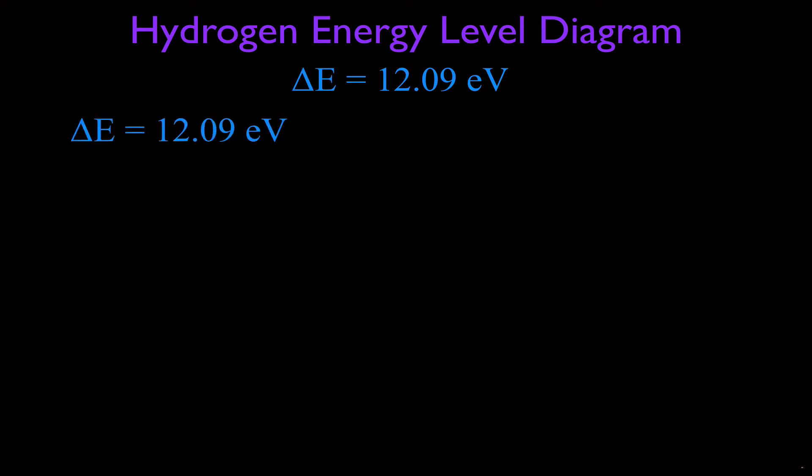First, I'd like to convert this to joules. Now you can do this all in one step. In the last video I went through it more step by step. This time we're going to combine a couple steps, but first of all I want to convert 12.09 electron volts into joules.